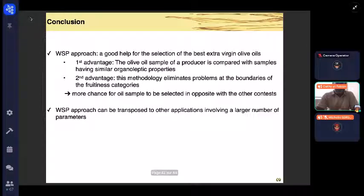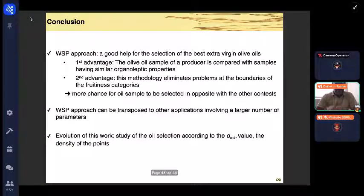WSP approach can be transposed to other applications involving a large number of parameters. Development tracks for this work include optimizing the size of covering surfaces—where is the limit to keep good information?—and offering a selection of the best olive oils depending on the density, to vary the percentage of selection according to the density of points on the surface considered. Thank you for your attention.